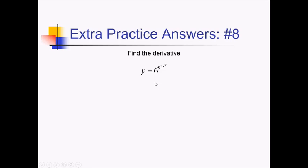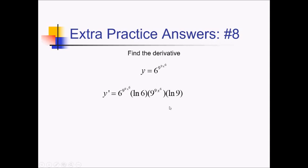To take this derivative, I need to use the chain rule and work my way in. My outermost function is 6 to the something. The derivative of that is 6 to the something — all that stuff — times the ln of 6. That's the outer derivative. Next I have to take the derivative of 9 to the something. That derivative is 9 to the 9x to the 6th, times the ln of 9. Next, I take the derivative of 9x to the 6th, which is 54x to the 5th.